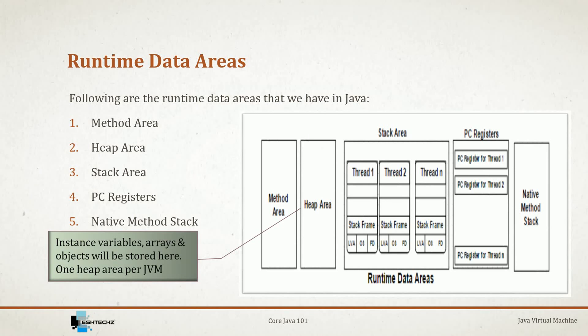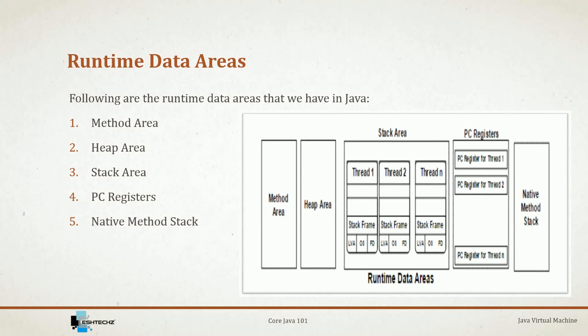In a multi-threaded environment where multiple threads access the same variable, data consistency cannot be guaranteed in method area or heap area. The third area is the stack area, and importantly it is thread-safe. To achieve this, for every thread a separate runtime stack is created. All method details are stored in stack memory as stack frames, and all local variables are created in stack memory. Think of it as a single stack with pile of stack frames stacked on top of each other.